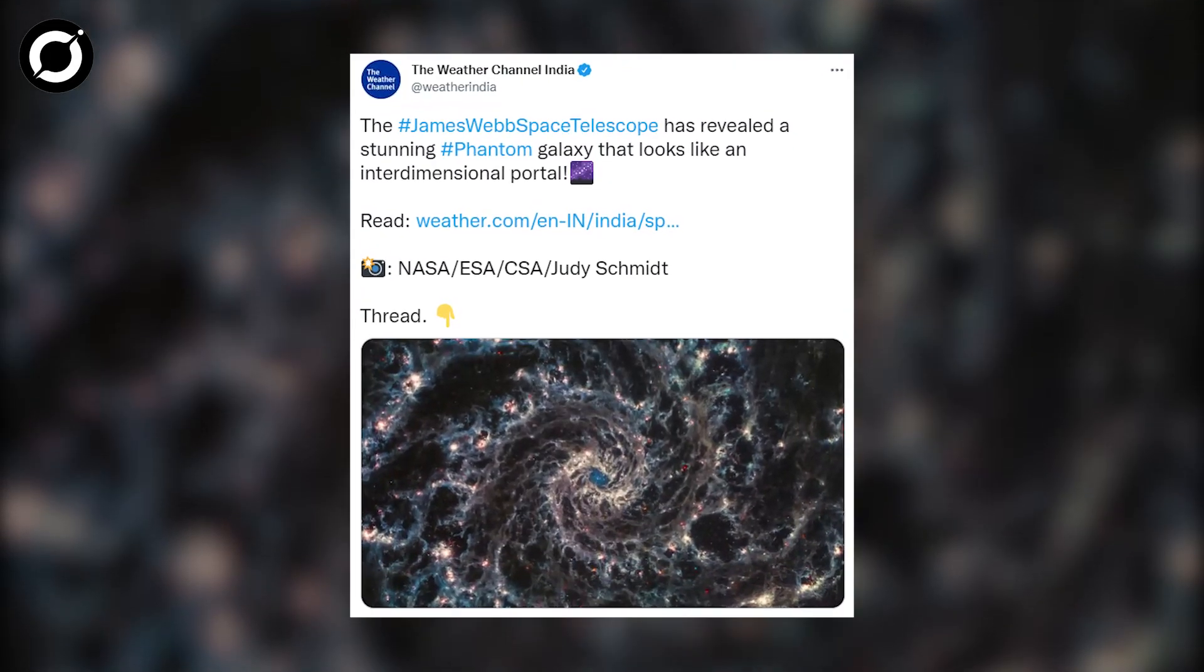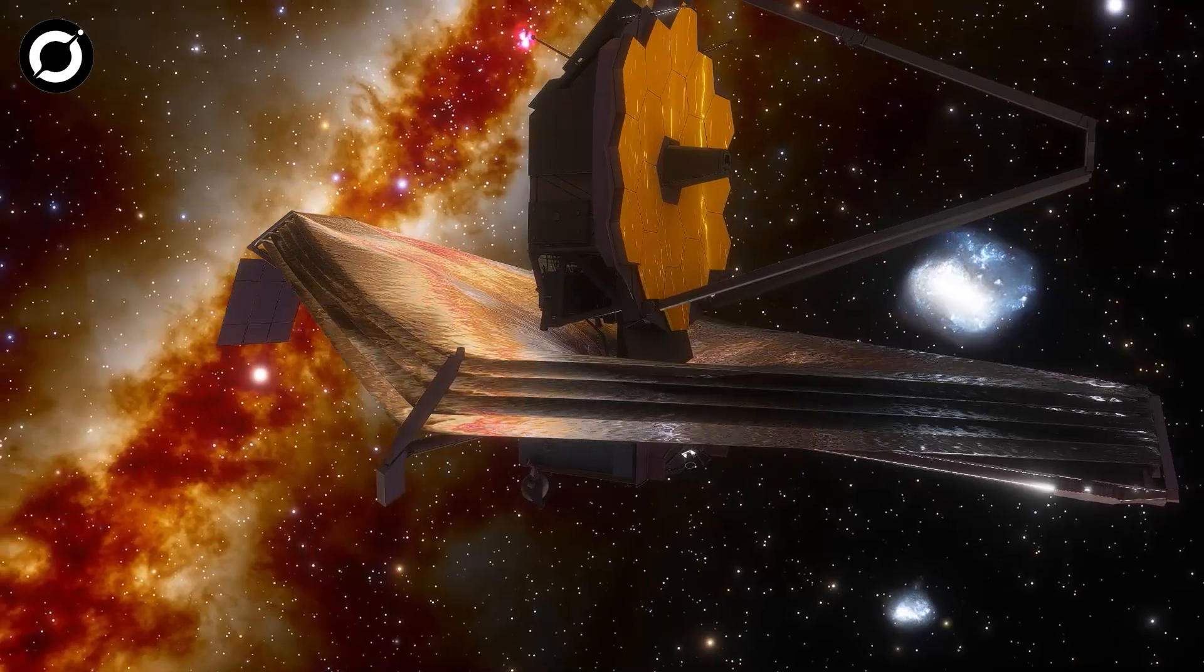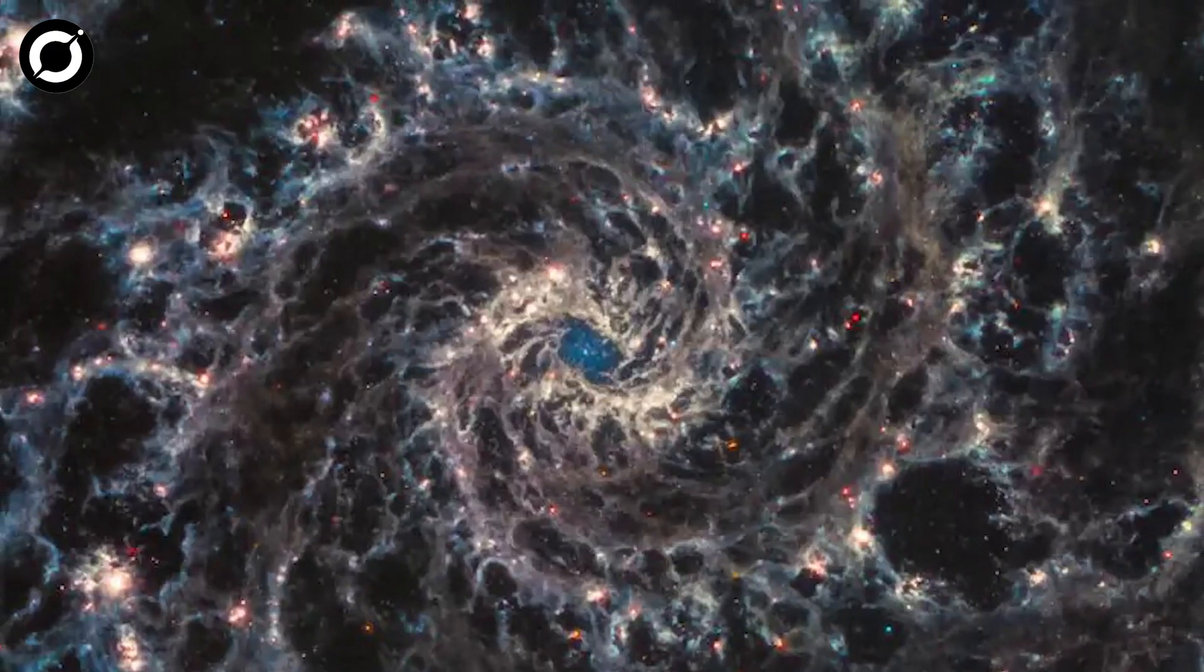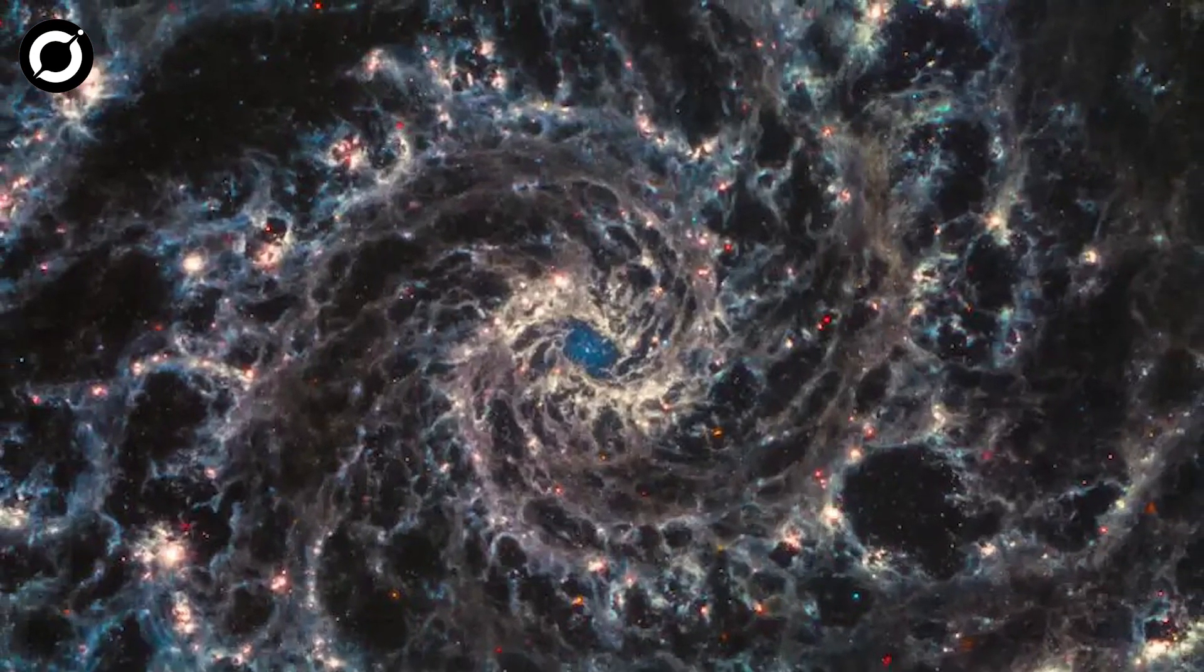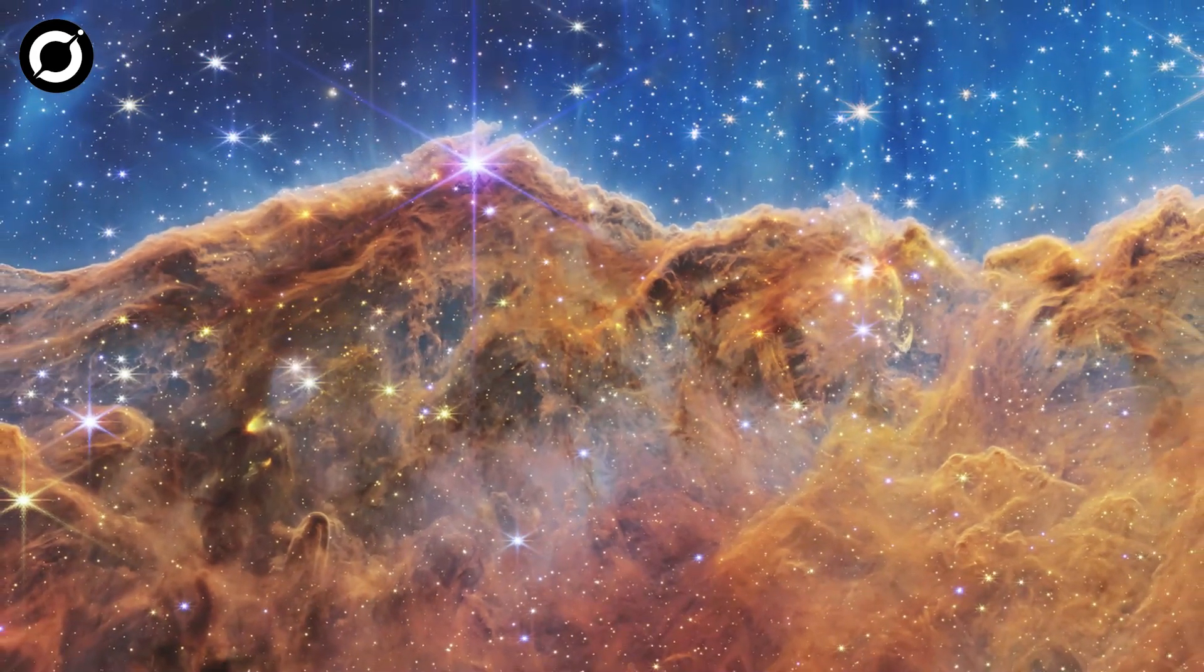Recently, astronomer Judy Schmidt produced a new image of the Phantom Galaxy by processing the data available from Webb Observations. Dubbed Messier 74 or NGC 628, the galaxy has been photographed using Webb's mid-infrared instrument, which helped peer through the thick cosmic dust.